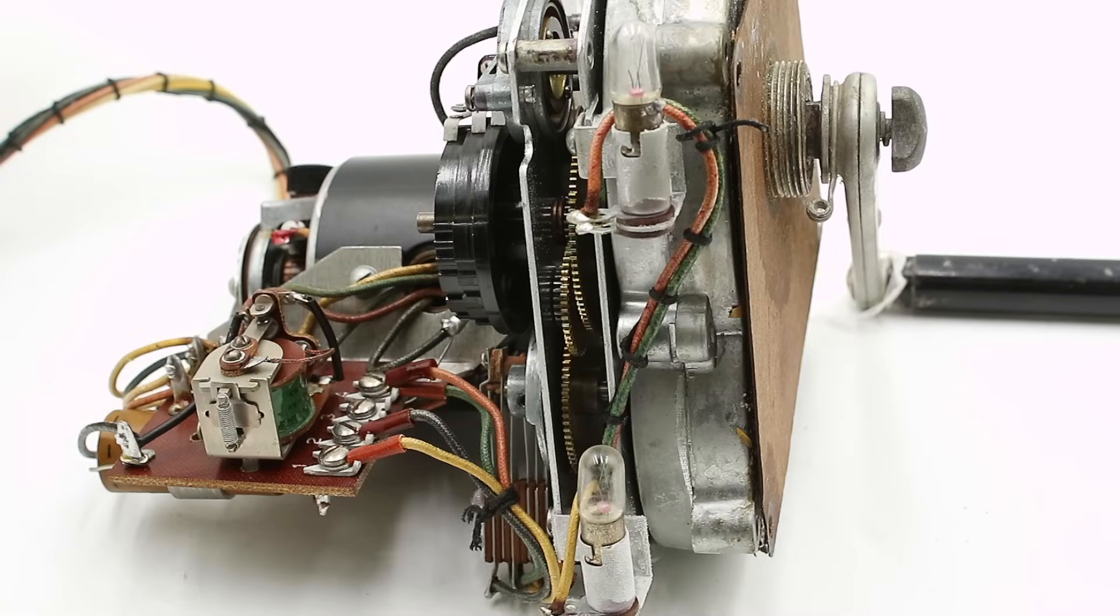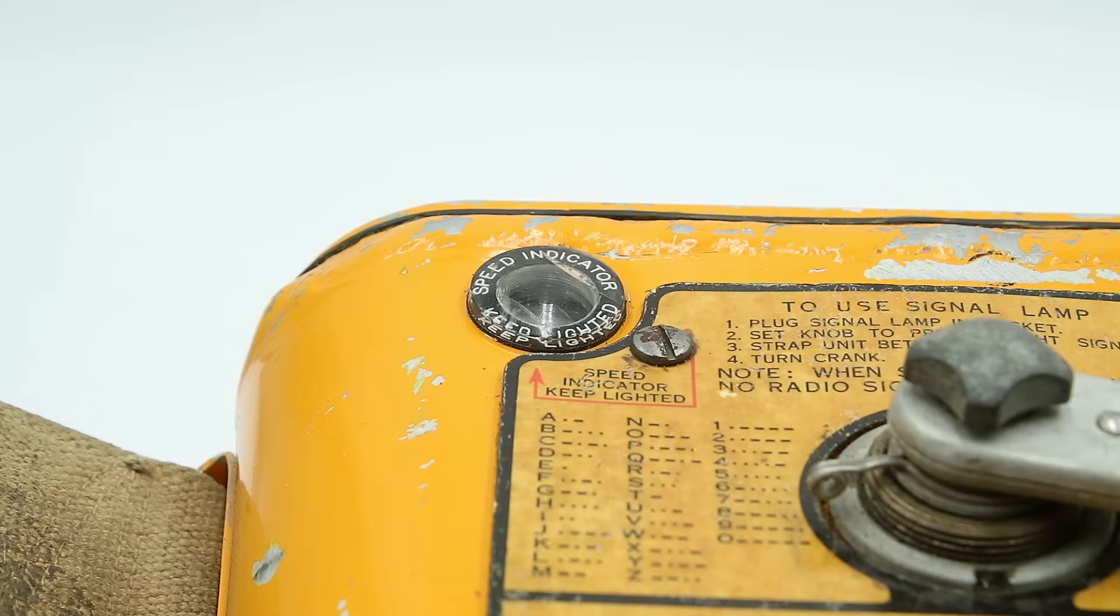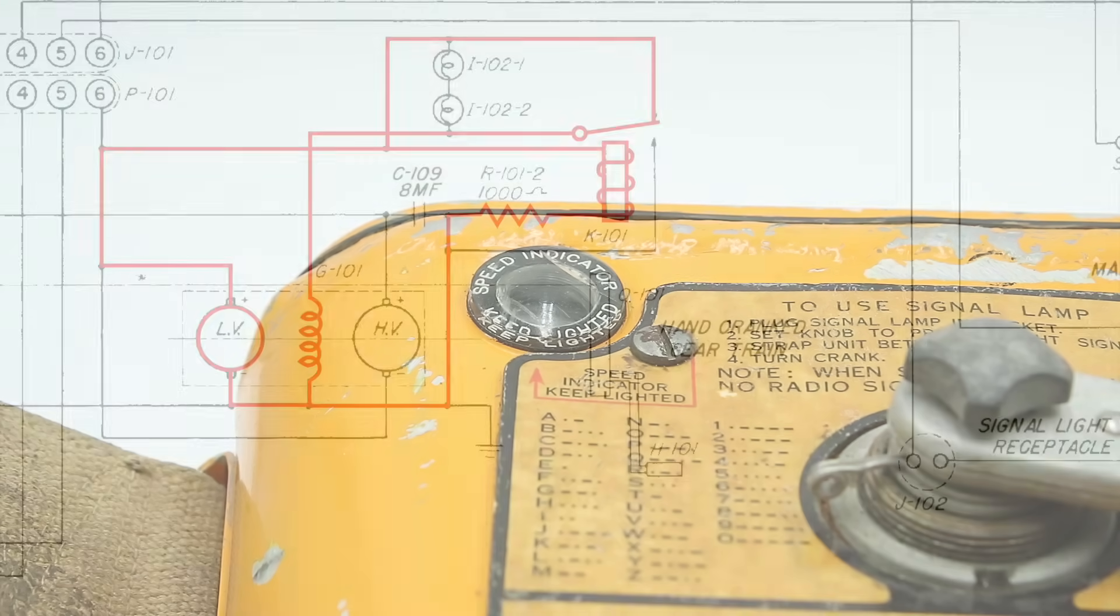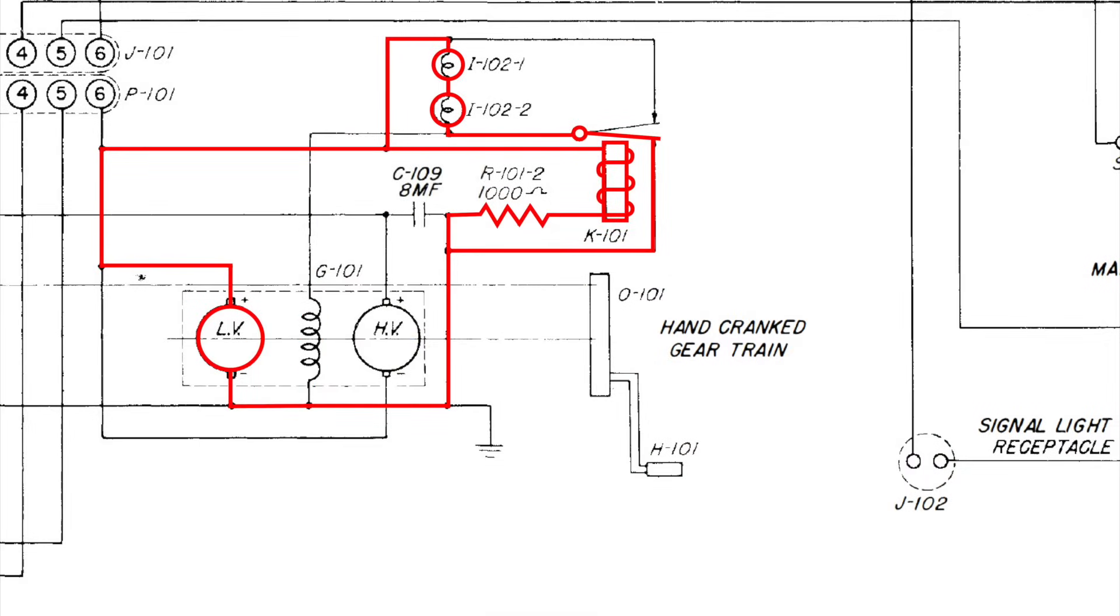First, it redirects the current into the ballast lamps located underneath the speed indicator window here. And second, it shorts out the generator field coil, weakening the magnetic field and reducing the generator output. As the current drops, the relay contacts close, re-energizing the field coil and increasing the output voltage anew, and so on and so forth. And this produces a negative feedback loop that maintains the output voltage of the dynamo at nominal levels, no matter how fast you turn the crank.